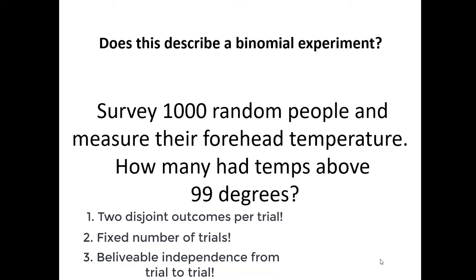Going through the list of binomial characteristics: number one, each trial has only two outcomes — either they are above 99 degrees or they're not. Number two, there's a set number of trials — I said survey 1,000 random people. And number three, does each trial have any impact on the next trial? If you're surveying random people, you wouldn't think that one person's forehead temperature would impact some other random person's forehead temperature. Maybe if they're in the same house someone with a fever could infect another person, but that's not random sampling — that's convenient sampling. So as phrased here, this is definitely binomial.